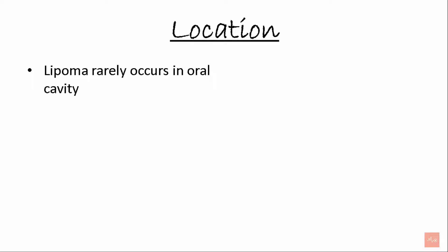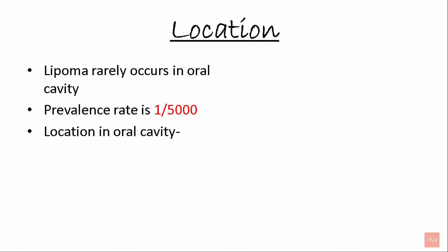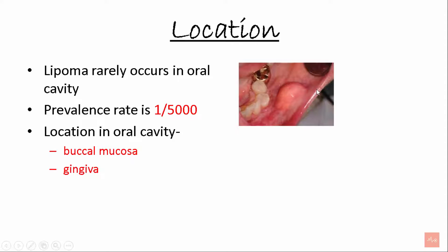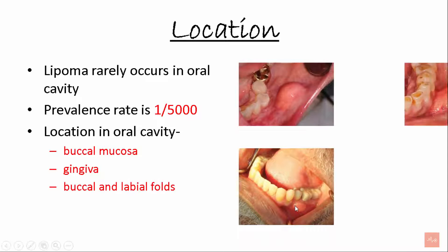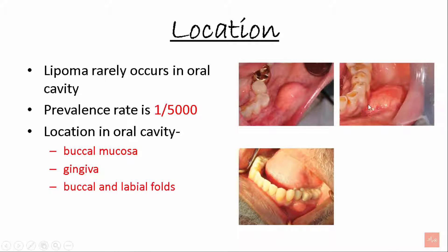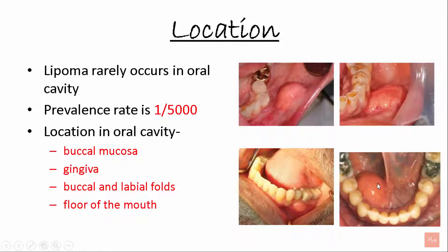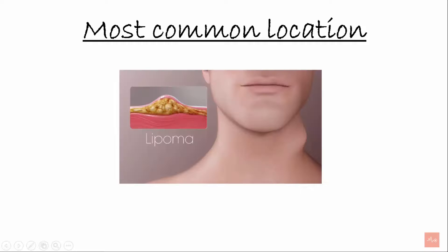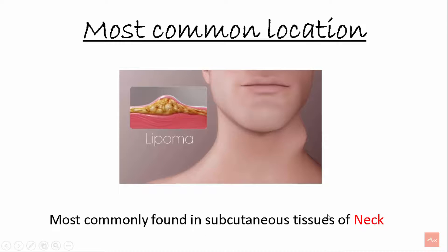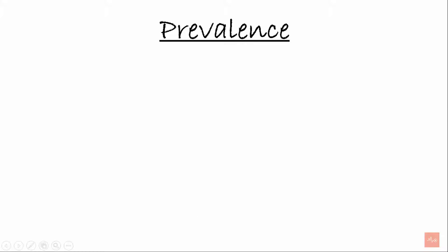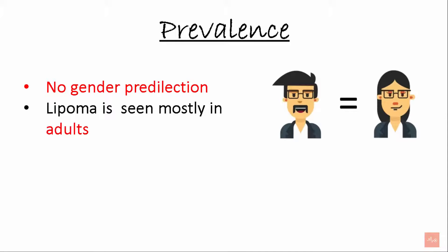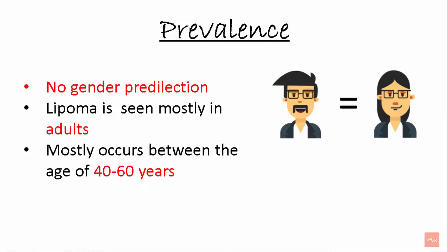Lipomas rarely occur in the oral cavity. Locations within the oral cavity include the buccal mucosa, gingiva, buccal and labial folds, and floor of the mouth. The most common location of lipoma overall is found in the subcutaneous tissue of the neck. Regarding prevalence, there is no gender predilection. Lipoma is seen mostly in adults, occurring between the ages of 40–60 years, and is very rare in children.